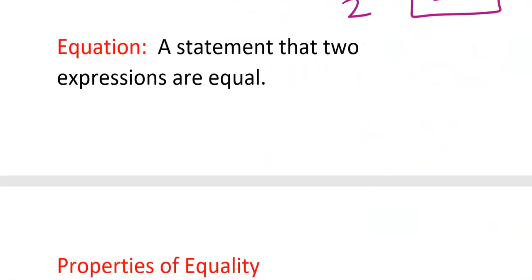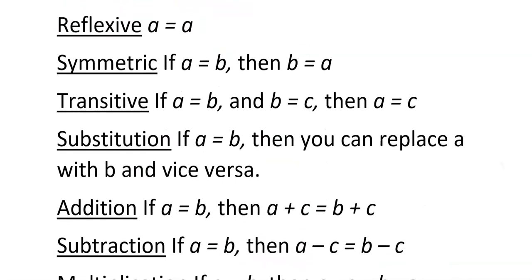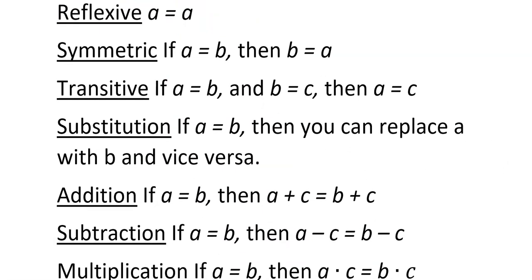An equation is a statement that two expressions are equal. We have some properties of equality — you did work on these in geometry, so write them down if you've forgotten. Reflexive: A equals A, or 2 equals 2, or XY equals XY. The same thing on the left equals the item on the right.